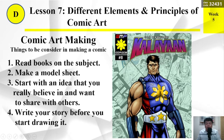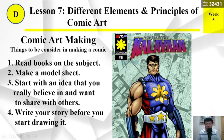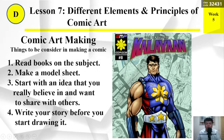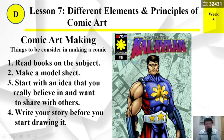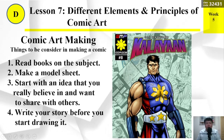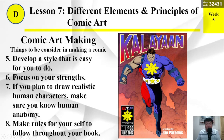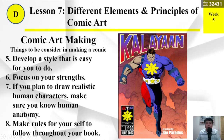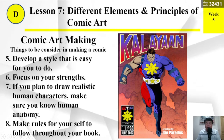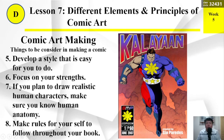Comic art making — things to be considered in making a comic: Number 1: Read books on the subject. Number 2: Make a model sheet. Number 3: Start with an idea that you really believe in and want to share with others. Number 4: Write your story before you start drawing it. Number 5: Develop a style that is easy for you to do. Number 6: Focus on your strength. Number 7: If you plan to draw realistic human characters, make sure you know human anatomy. Number 8: Make rules for yourself to follow throughout your book.